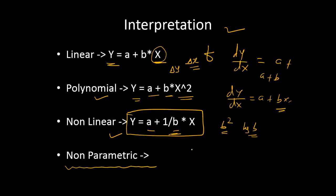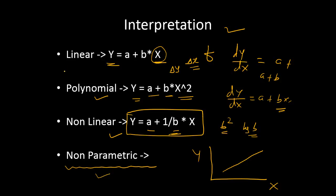Another type is the non-parametric model, which does not assume any functional form of f beforehand. In a linear model, we assume a straight-line relationship between x and y, whereas in non-parametric models there is no such assumption. It is more difficult to compute the functional form of the relationship, but it has its own advantages. However, it is difficult to interpret, so when it comes to interpretation it is advisable to go with linear models and simple statistical models which are much easier to interpret.